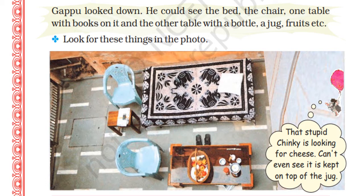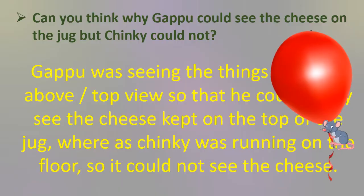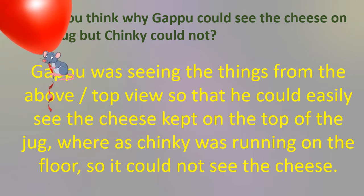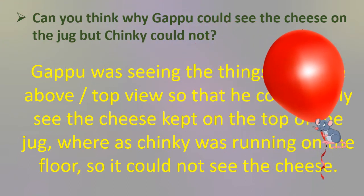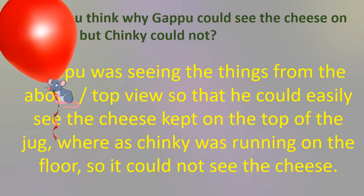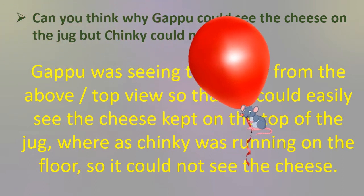Gappu is thinking, 'That stupid Chinkie is looking for cheese — can't even see it. It is kept on the top of the jug.' Children, do you know why Chinkie couldn't see the cheese but Gappu can? Gappu was seeing things from the top view — from above — so he could see the cheese kept on the top of the jug. Whereas Chinkie was running on the floor, so it could not see the cheese.